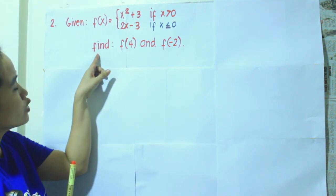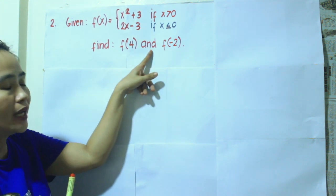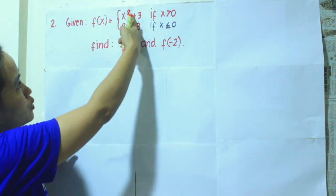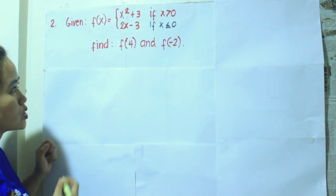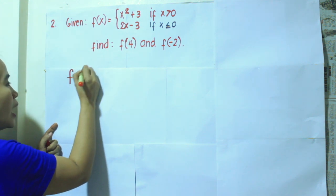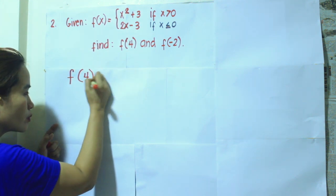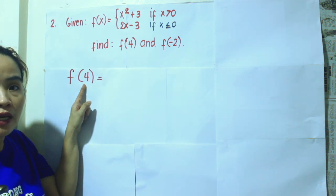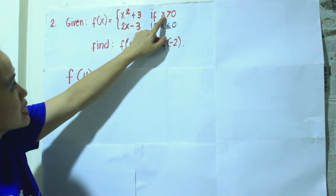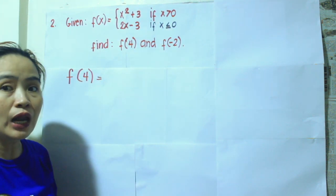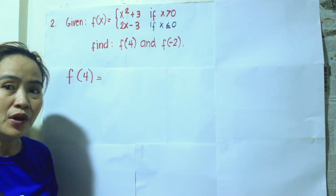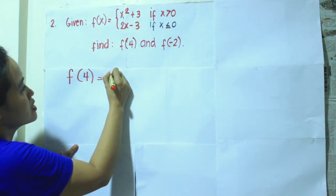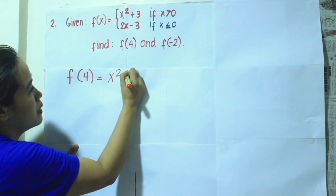We are asked to evaluate f of 4 and f of negative 2. We choose which sub-function to use by identifying where the input falls. Since 4 is greater than 0, we will be using x squared plus 3.